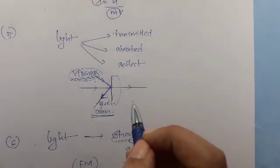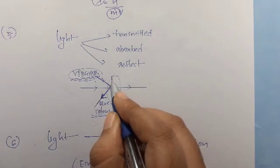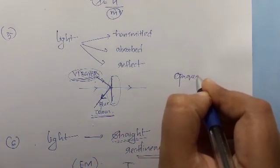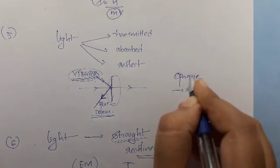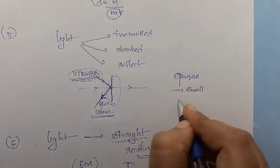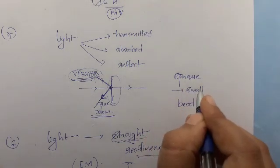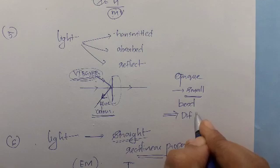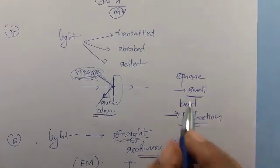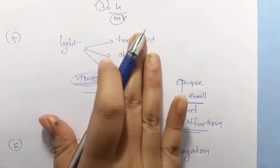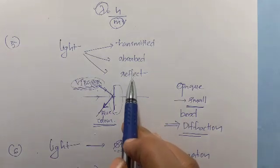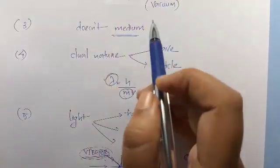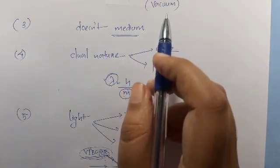Another property: when light passes near a very small opaque object, the light bends around the sides of that object. This property is called diffraction. To summarize: light travels in a straight line, can be transmitted, absorbed, or reflected, exhibits dual nature, has a speed of 3 × 10⁸ m/s, and is an electromagnetic wave.